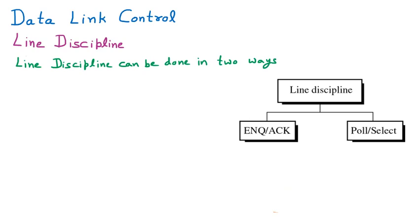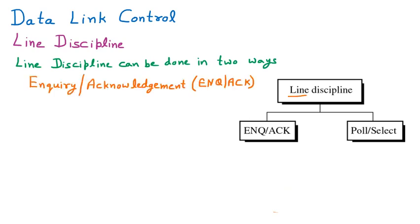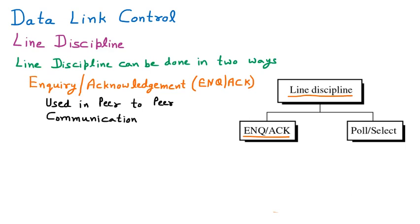As shown in the diagram, the first method is ENQ and ACK — Inquiry and Acknowledgement. An inquiry is sent and in return an acknowledgement is received. This method is used in peer-to-peer systems. In peer-to-peer communication, we have two systems — say C1 and C2 — connected directly with no one in between. That is called peer-to-peer communication, and this is where the Inquiry and Acknowledgement system works.